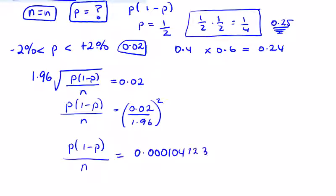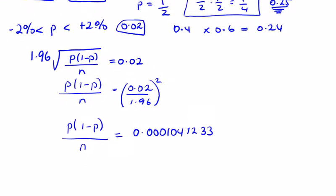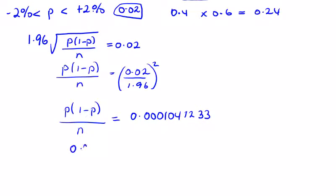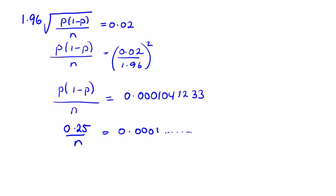And as we said earlier, the max value of p times 1 minus p will be 0.25. So to max out this expression, they don't give us anything else here, 0.25 over n is equal to this. And then if we rearrange, 0.25 divided by this big long expression will give me a value for n. So n in this case is equal to...